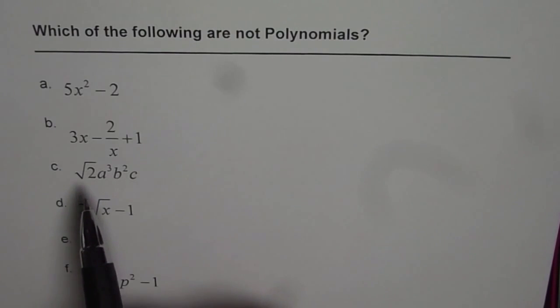The second one is 3x minus 2 over x plus 1. Well, this is not a polynomial. Can you tell me why?